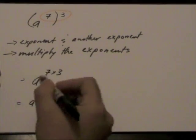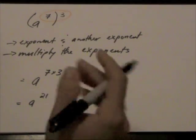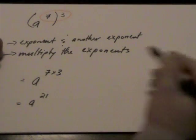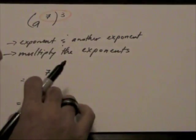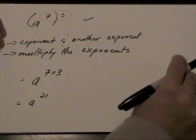And our simplified answer becomes a to the power of 21. Now imagine if we would have done that. We would have been multiplying a by itself 21 times. But this is a much simpler way of simplifying any power of a power.